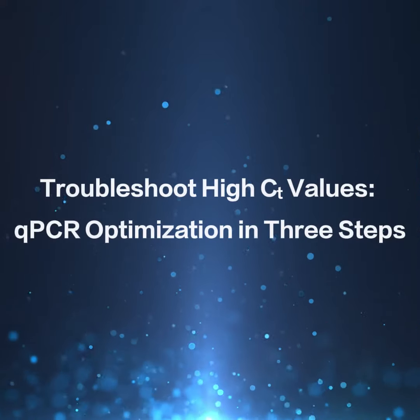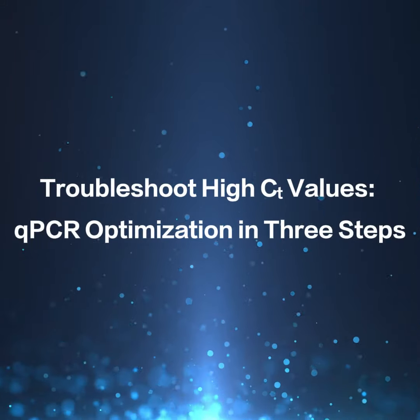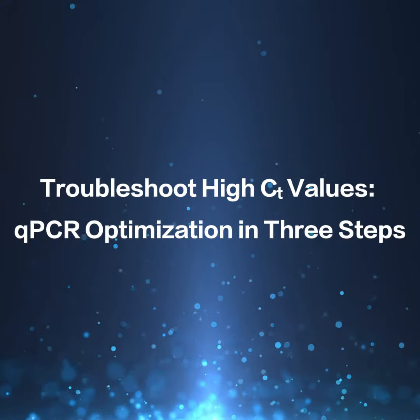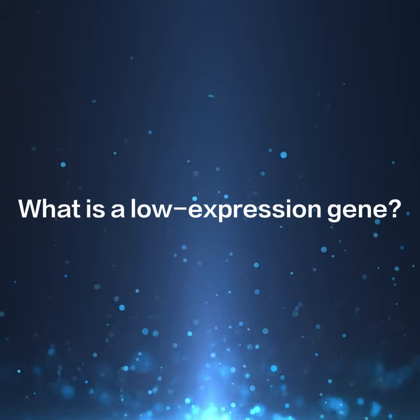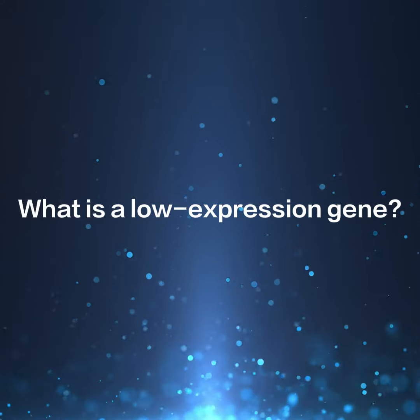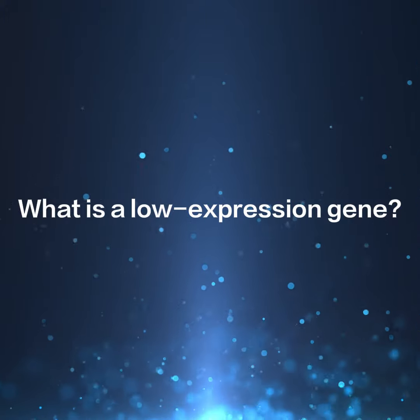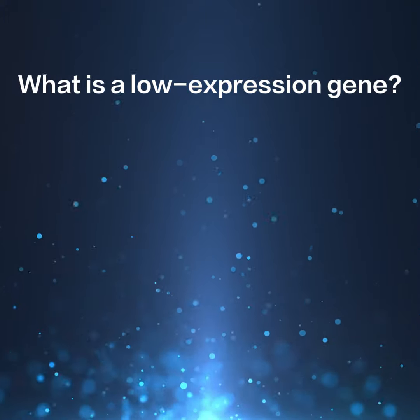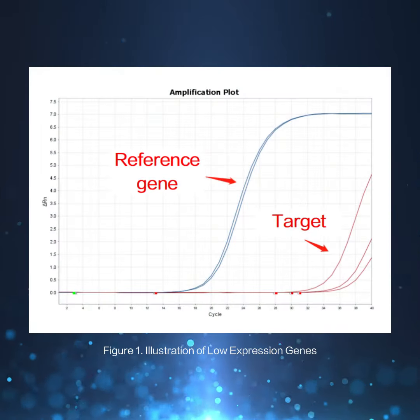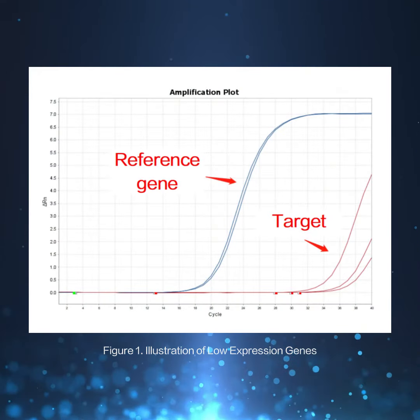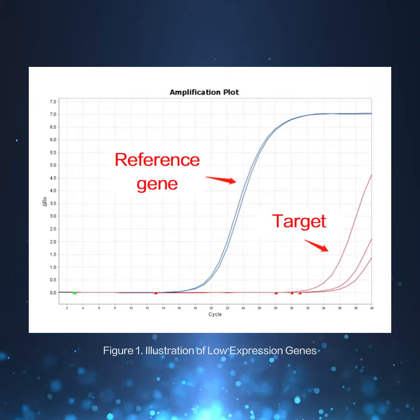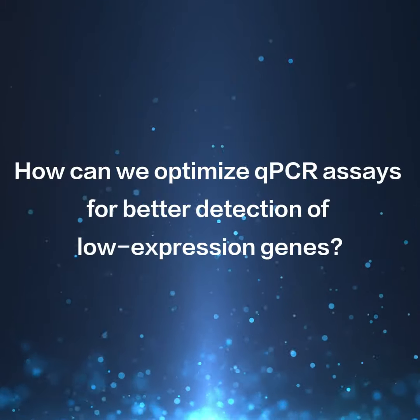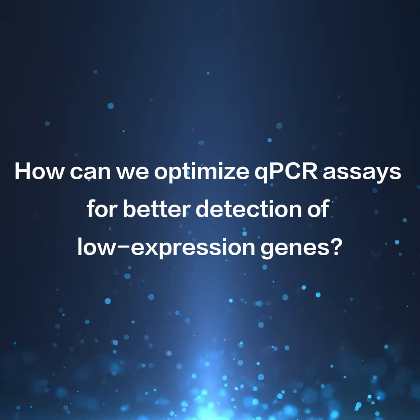Are you having trouble with high CT values and poor repeatability? Find out whether issues are caused by low gene expression and check out tips on how to optimize your experiment. Low expression genes usually refer to those genes with low reads per kilobase of exon per million mapped reads (RPKM) in a given sample. In qPCR assays, the CT values of low expression genes are often too high, sometimes accompanied by poor reproducibility between duplicate wells.